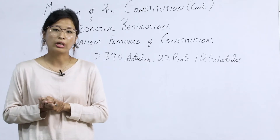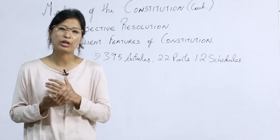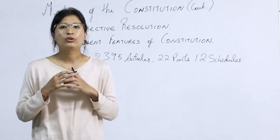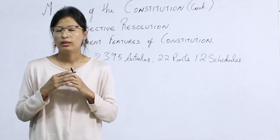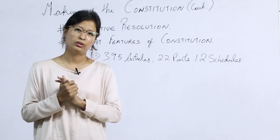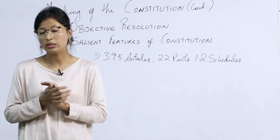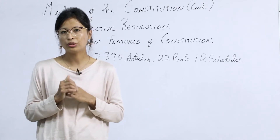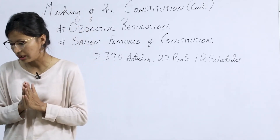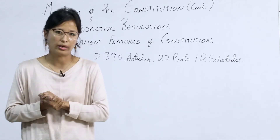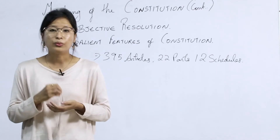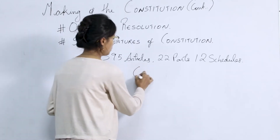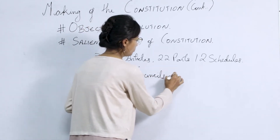Point number four: parliamentary or cabinet system of government. The head of state — the President — has functions that are ceremonial or formal in nature; he is the nominal head. The real executive is in the hands of the Council of Ministers headed by the Prime Minister.